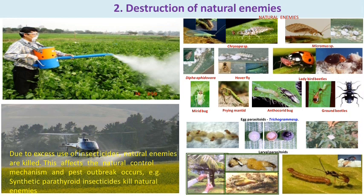The second cause is the destruction of natural enemies — the most serious and important reason for pest outbreaks. In the environment, natural enemies check the insect pest population and maintain the balance of nature. Due to the continuous or excessive use of insecticides, natural enemies are killed, affecting the natural control mechanism, and pest outbreaks occur. Synthetic pyrethroids, for example, kill natural enemies.